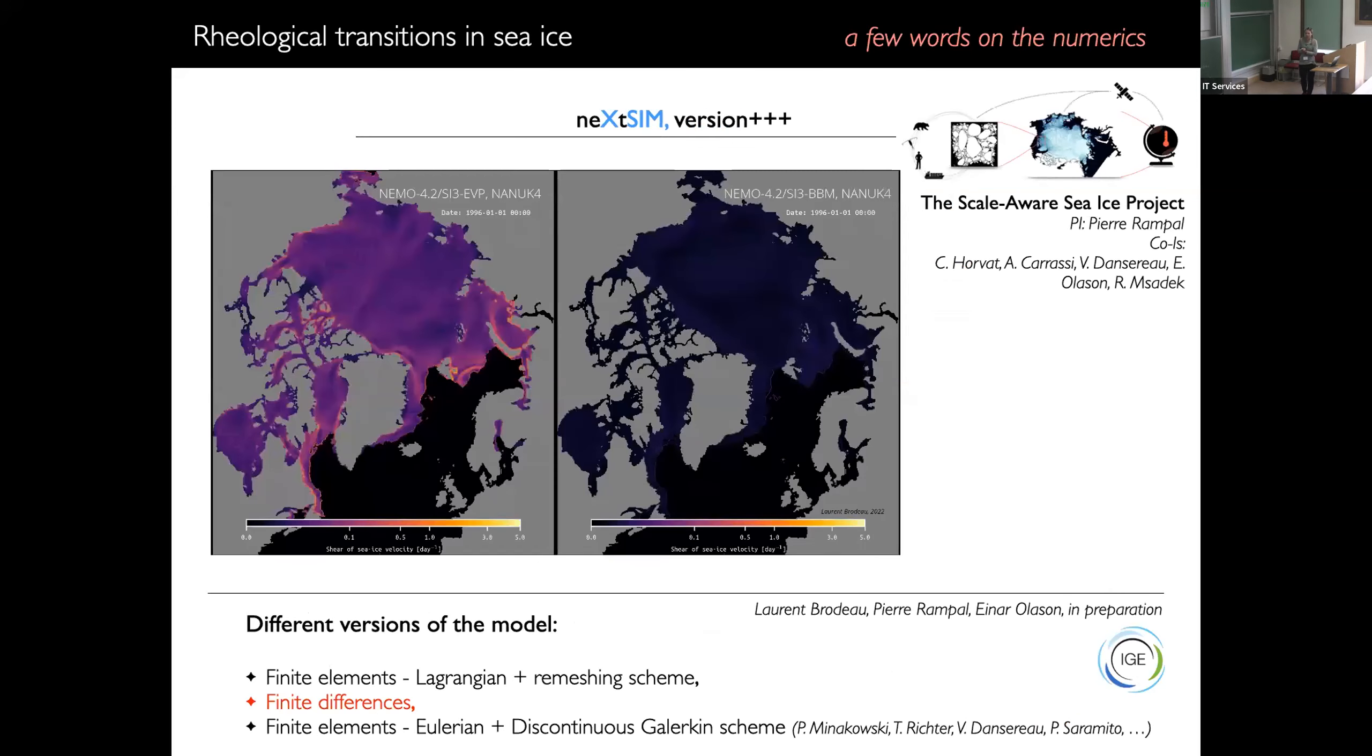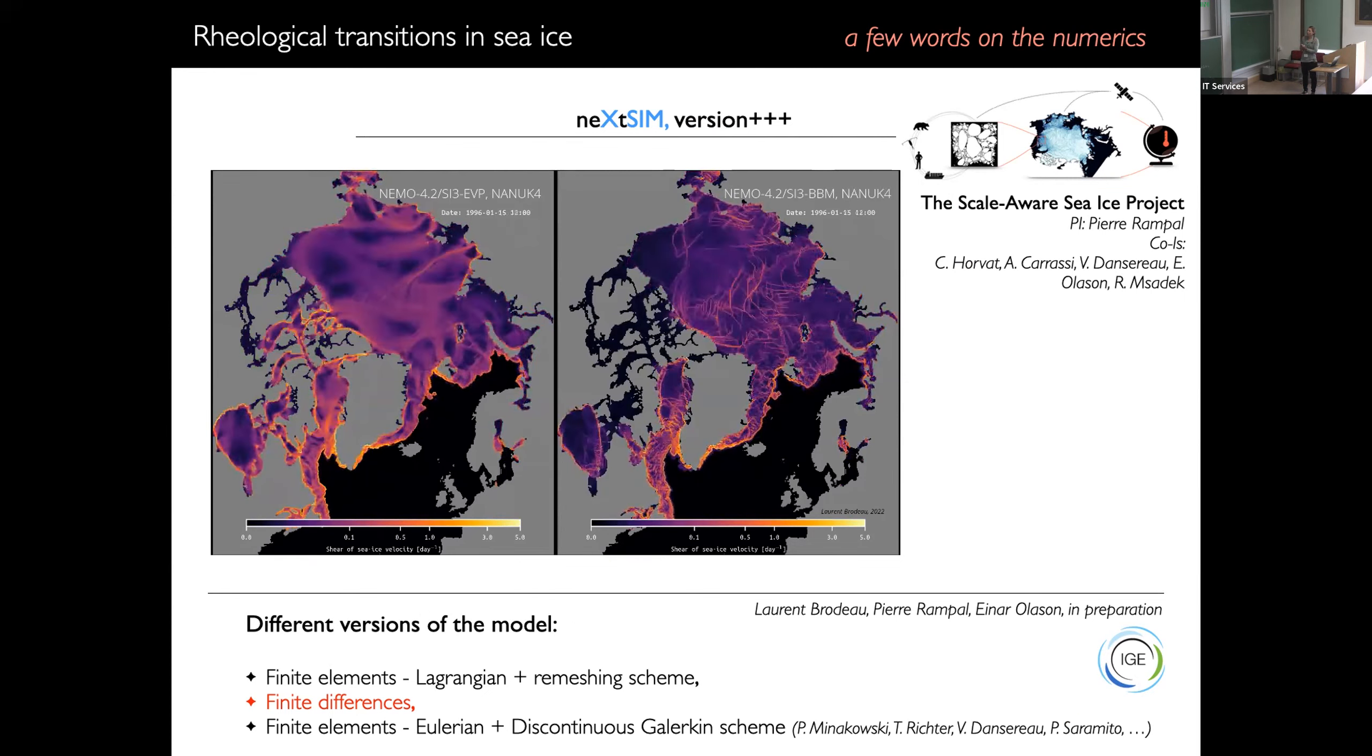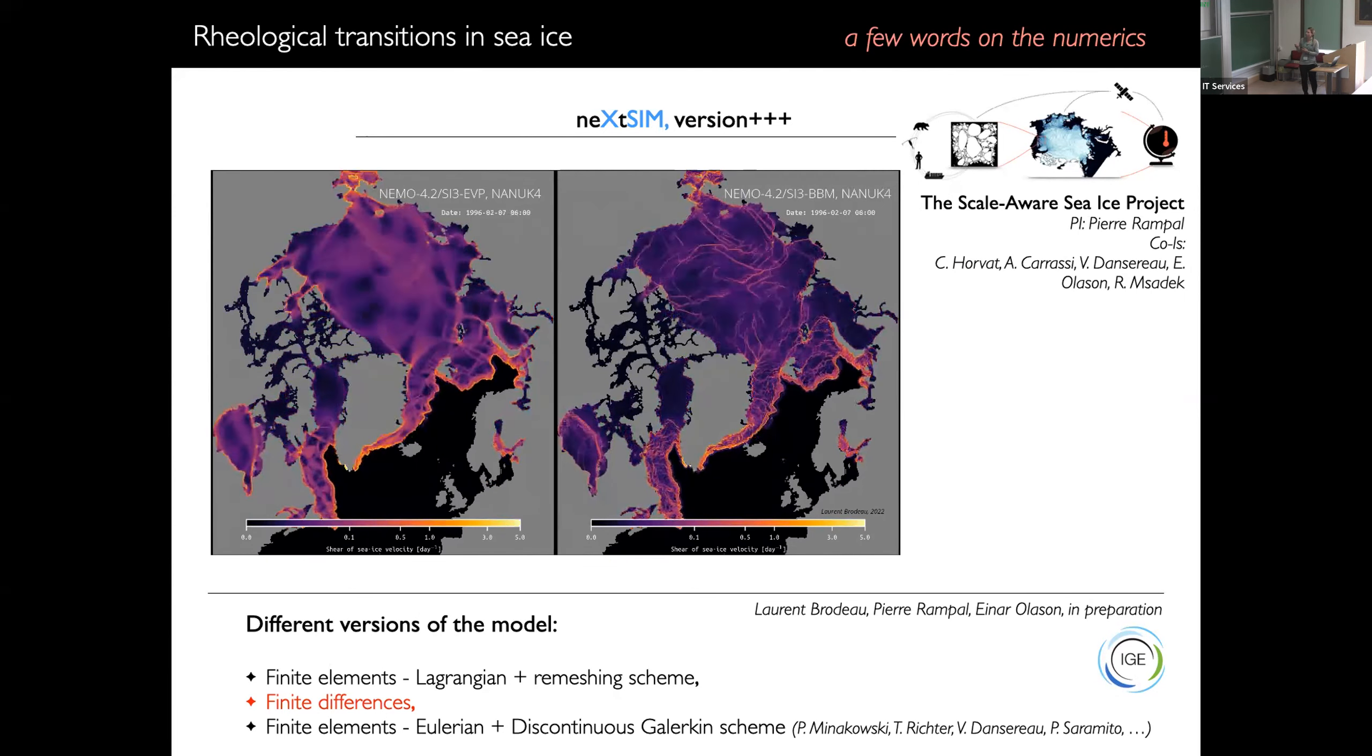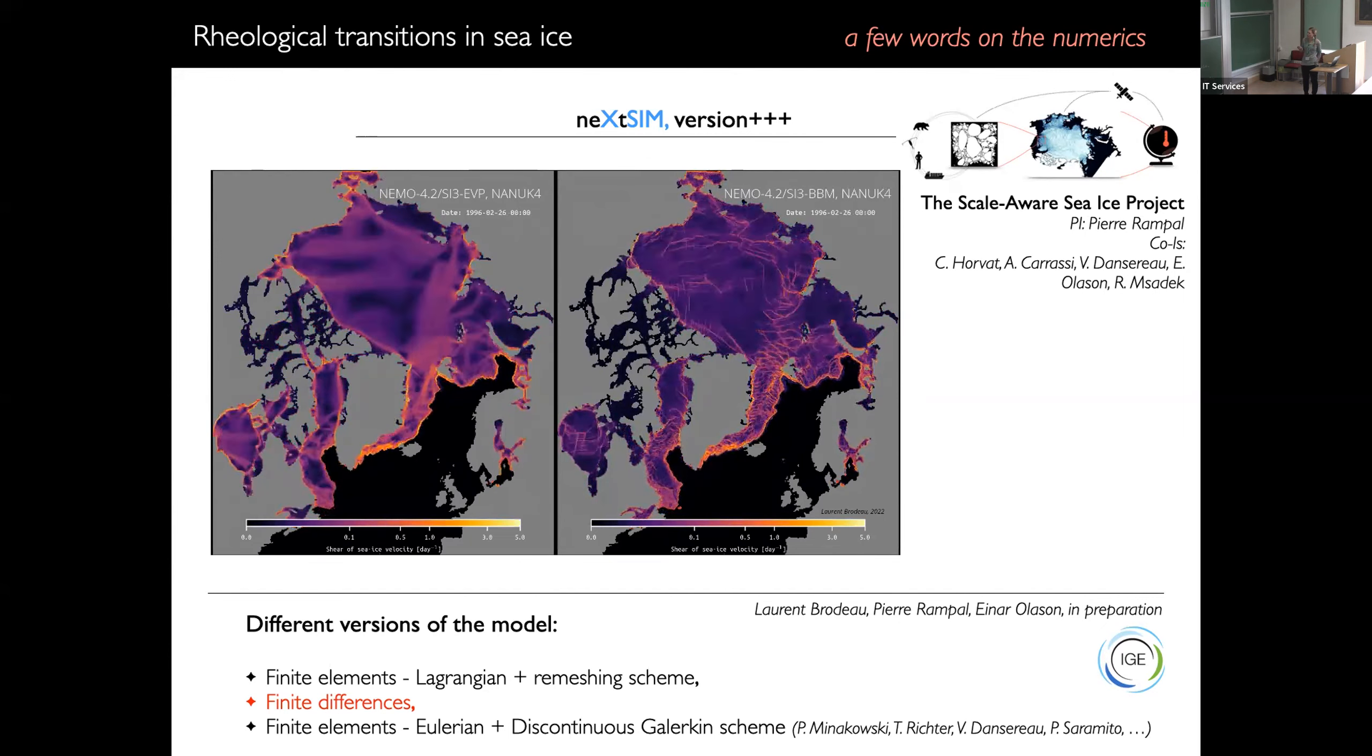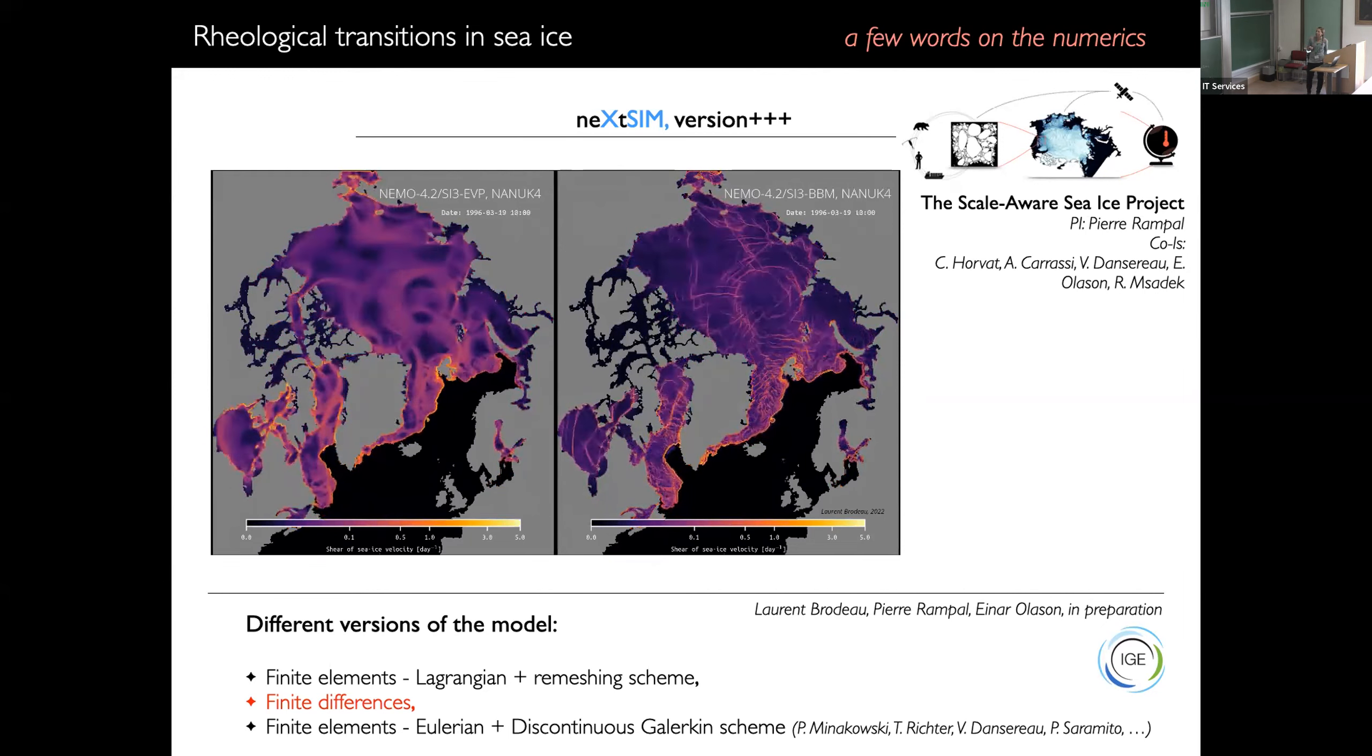And that has allowed us to go to the next step. To use these rheologies in models that we can use at a global scale and over climate type simulations. Antoine mentioned that the model is a finite element, not necessarily. So now it's been implemented in other numerical schemes that are more compatible with the sea ice community. That is because we want to have fair comparison between other rheologies for one thing, and also for people to use the model. So here, for instance, you have an animation of the field of shear deformation with the BBM model that's been implemented in the coupled sea ice and ocean model NEMO CI3.